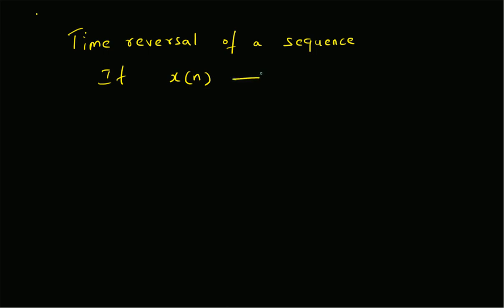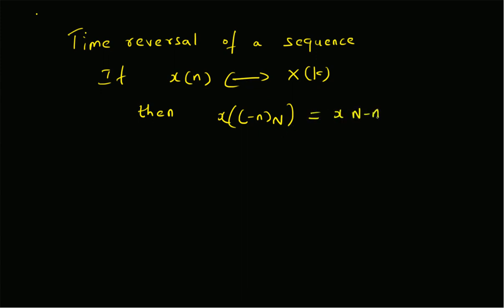Given that x[n] has a DFT defined as X[k], then x[-n mod N] — that is the time-reversed sequence — has DFT equal to X[-k mod N], which is in turn equal to X[N-k].